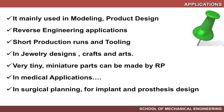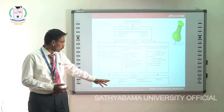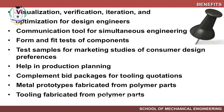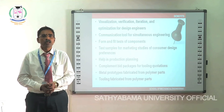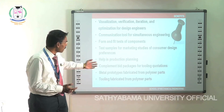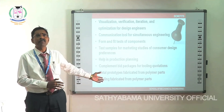The RP family flowchart shows the process from iteration, generative process, and finishing through to applications in aerospace, automobile, jewelry, biomedical, consumer electronics, and home appliances. Benefits include visualization, verification, iteration, and optimization for design engineers. RP also supports simultaneous engineering, form and fit testing, marketing studies, production planning, and fabrication of metal prototypes and tooling from polymer parts.